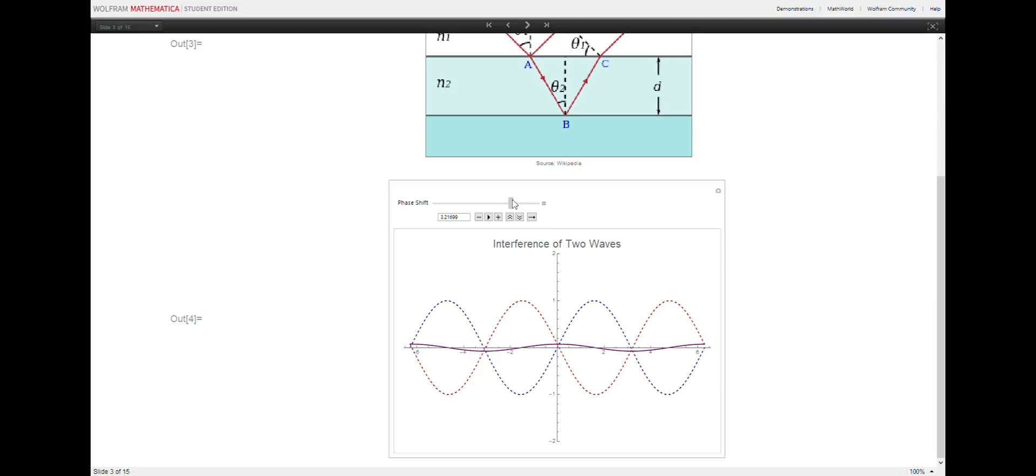Or, if the phases are perfectly aligned, the resultant wave has twice the amplitude, resulting in constructive interference.